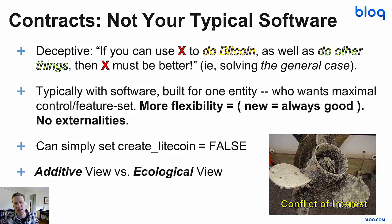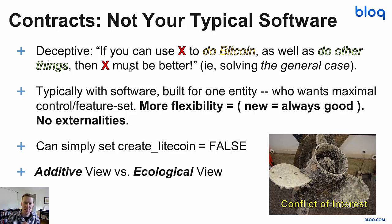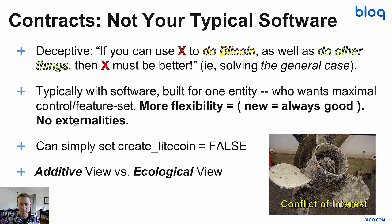Contracts are not your typical software — people think that wrongly, it's a deception. You think that if I can use X to do Bitcoin as well as to do other things, then X just must be better, right? We've solved the general case. The reason you might think that wrongly is that with software, it's usually built for one person who wants the maximum amount of control over their feature set. So more flexibility is always good, new stuff is always good. There are no externalities — your ability to do something does not harm anything. The user is not going to be harmed by a feature they choose not to use. You think we just add more options, it must be better. But you would be wrong.